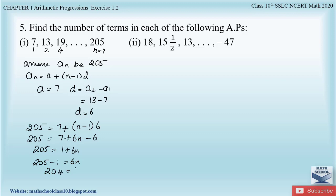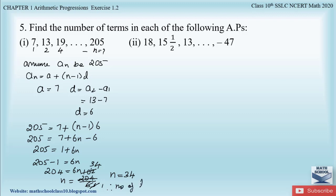Solving: n = 204 ÷ 6, which gives n equals 34. Therefore the number of terms in this AP is 34.